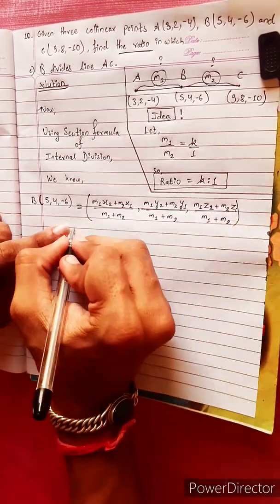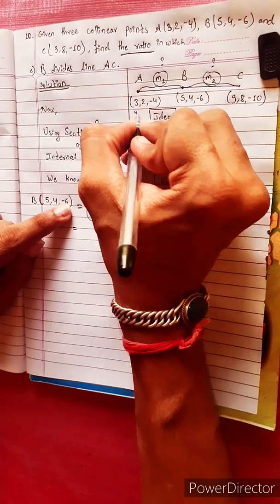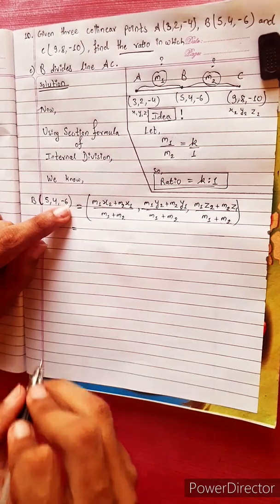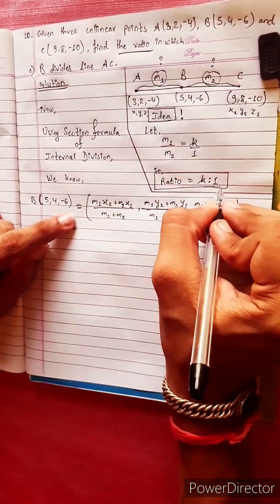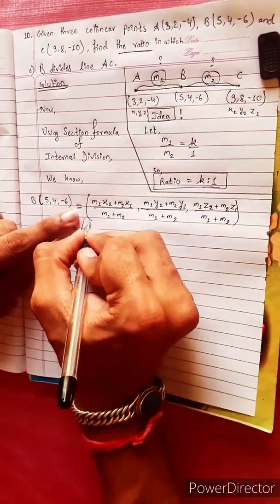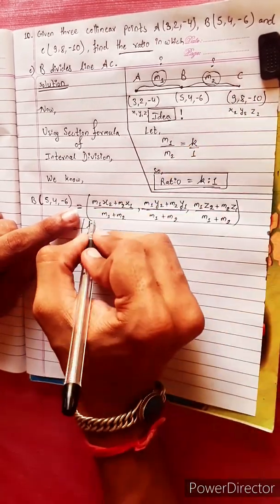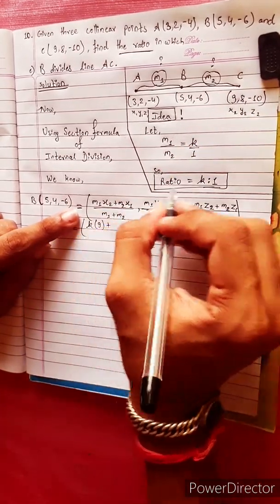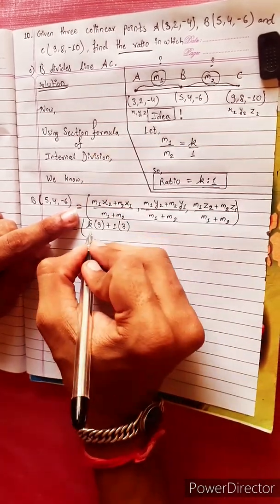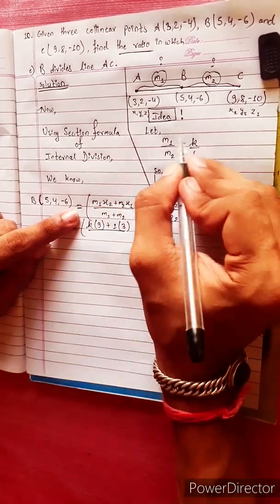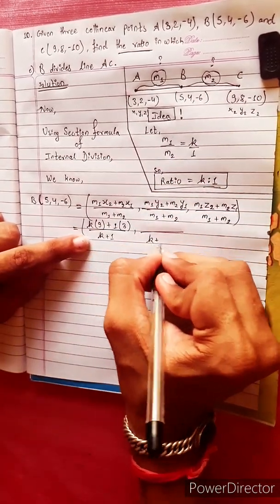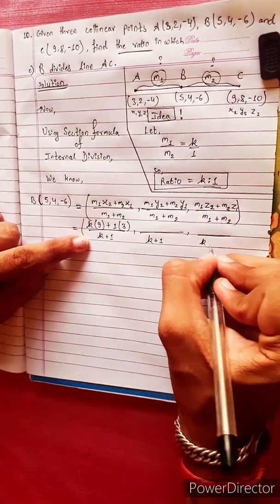M1 to M2 equals k to 1, so M1 equals k. X2 equals 9, plus M2 equals 1, X1 equals 3, divided by M1 plus M2 equals k plus 1. So x-coordinate equals (9k + 3) divided by (k + 1).